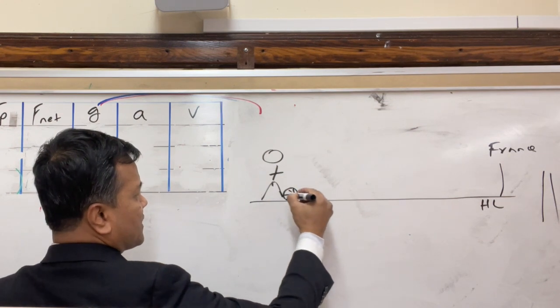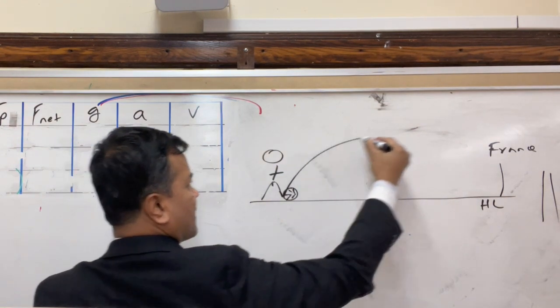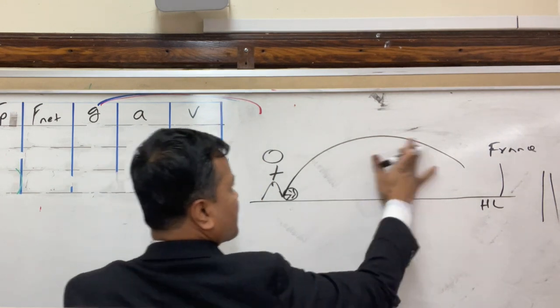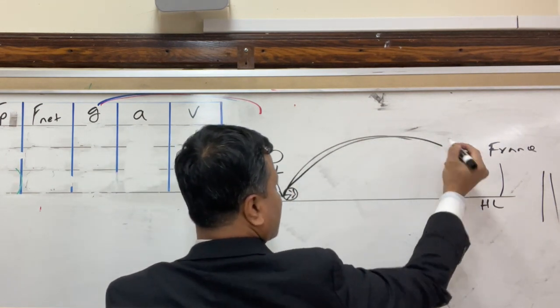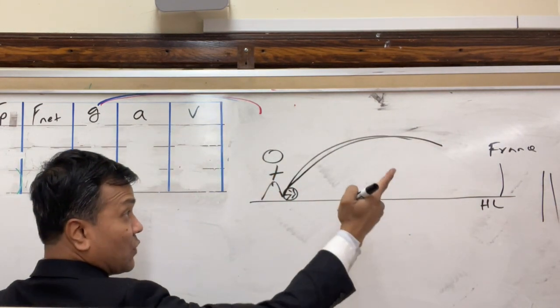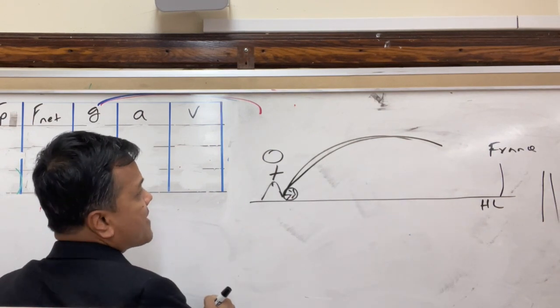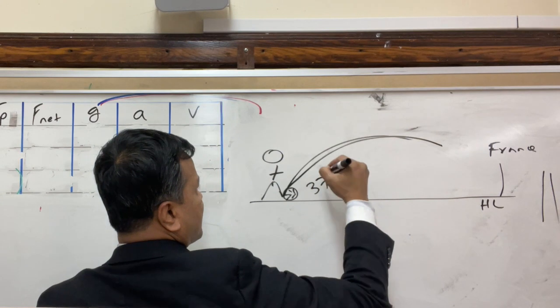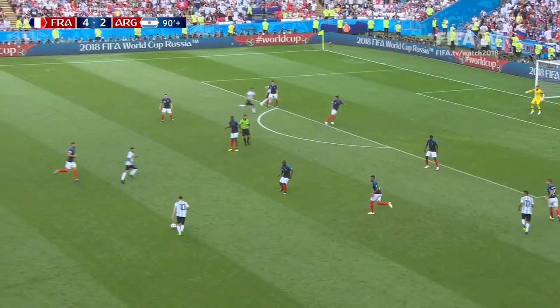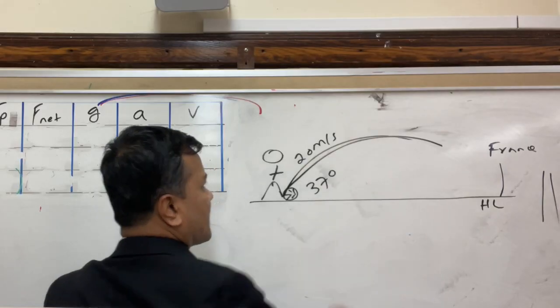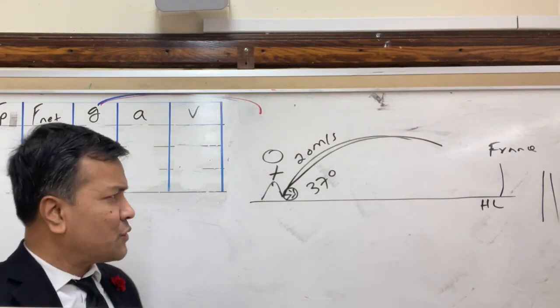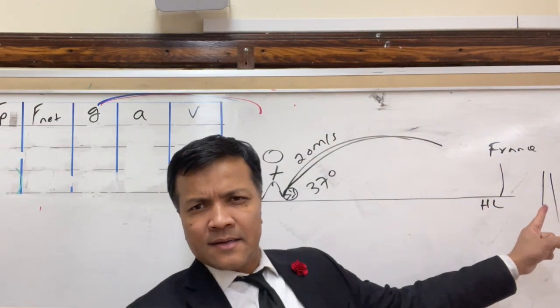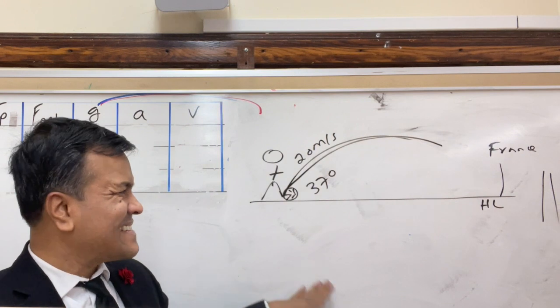The soccer ball is approaching the goal post of the French at 37 degrees and 20 meters per second. Will it ever be able to make it to the goal post which is 60 meters from the midfield?